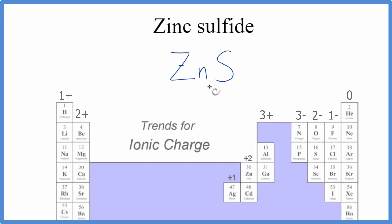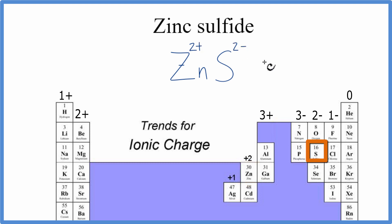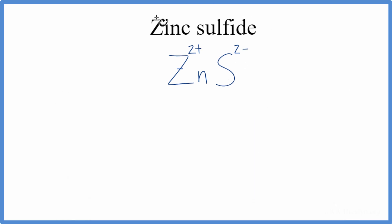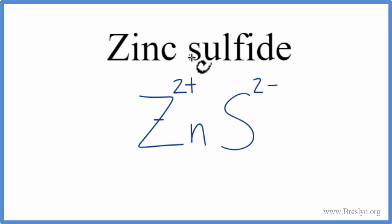Zinc is a transition metal, but it's a little bit odd because zinc always has a charge of 2+. Sulfur is 2-, so these charges need to add up to 0 to have a net charge of 0 for this neutral zinc sulfide molecule. So 2+ and 2- adds up to 0, so this is the formula for zinc sulfide: ZnS.